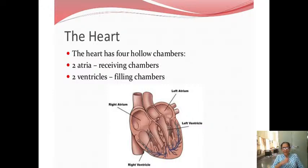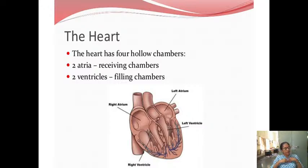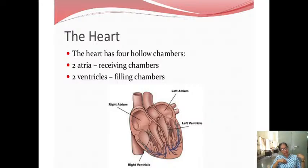The right atrium and the left atrium — the right atrium is getting blood from the superior and inferior vena cava, and the left atrium is getting blood from the pulmonary veins. The atria have a capacity function — that is, receiving the blood.